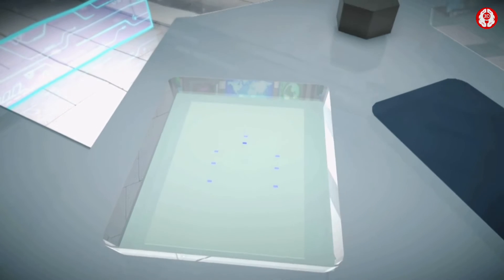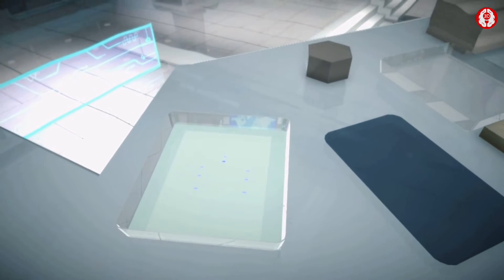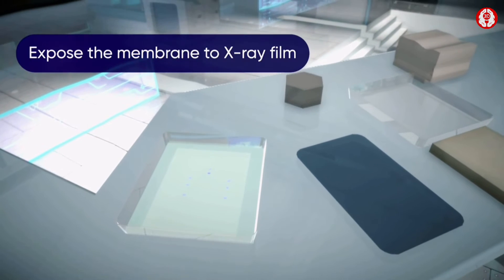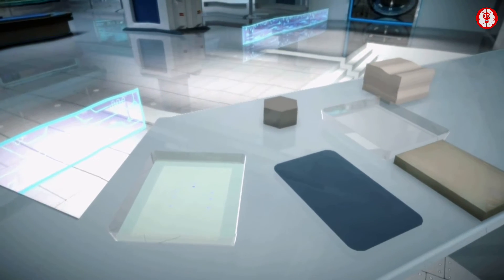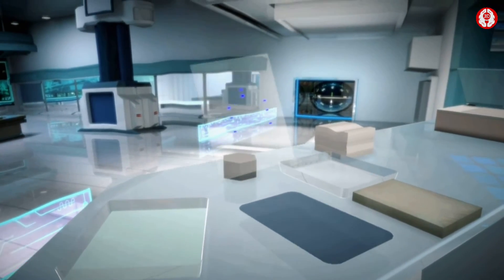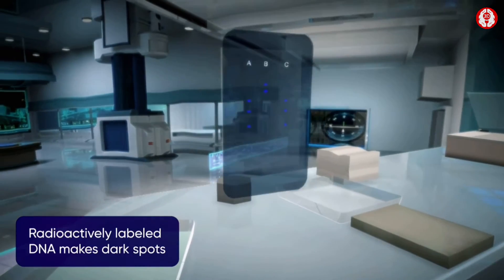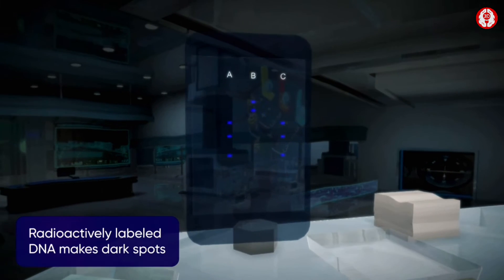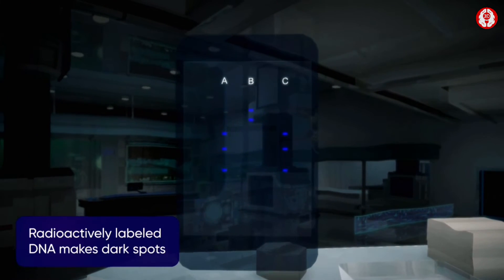Now let us perform autoradiography. In order to do so expose the membrane to the X-ray film. When the X-ray film is developed, a visual pattern of radioactively labelled DNA or DNA fingerprint can be observed on the autoradiogram.